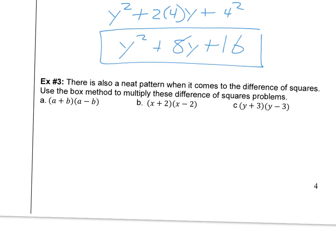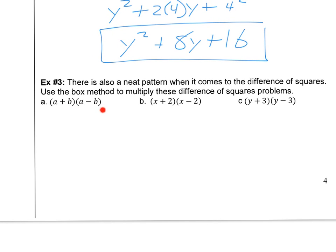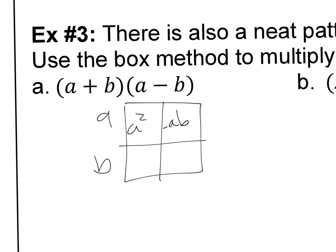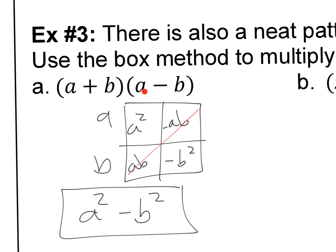There's another pattern called the difference of squares. We have a plus b times a minus b — these are called conjugates of each other. Using the box: we get a squared, negative ab, positive ab, and negative b squared. The ab and negative ab cancel each other out, so we end up with just a squared minus b squared.